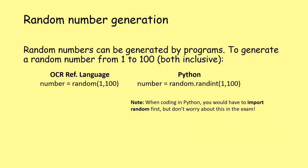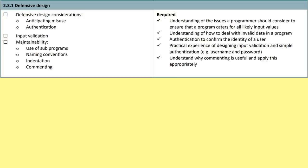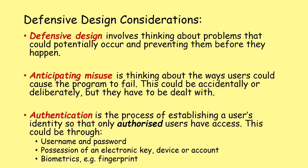Random number generation: to generate a random number from 1 to 100 inclusive - in OCR reference language: 'number = random(1, 100)'. In Python: 'number = random.randint(1, 100)'. In the exam you don't need to worry about importing the random library - you can just use random.randint and still get full credit.